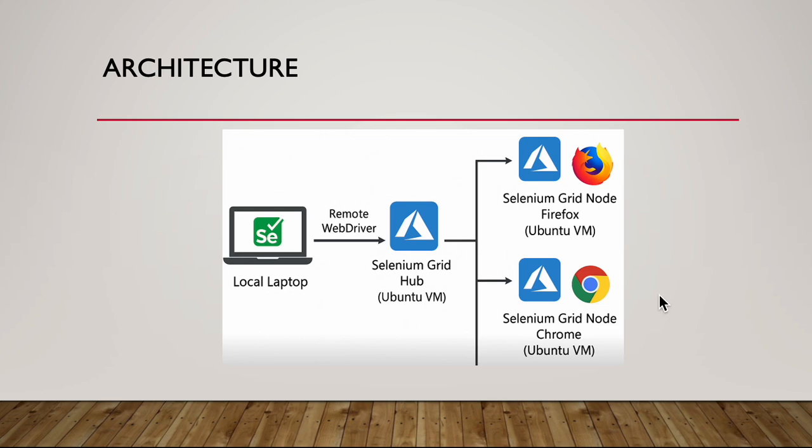Nodes: you have a Firefox node and a Chrome node. The nodes register with the hub and advertise their capabilities — in this example, Chrome and Firefox. Each node runs the actual browser containers.